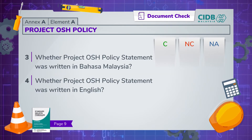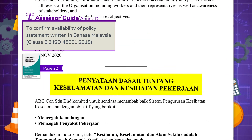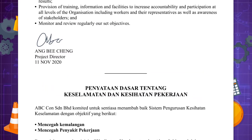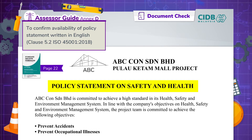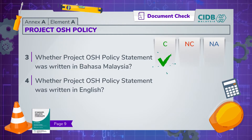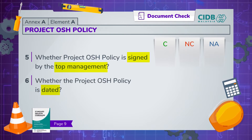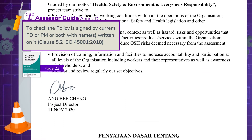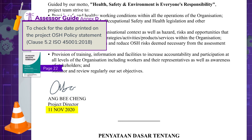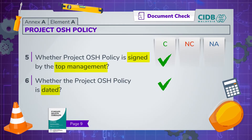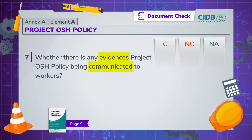Next, check if there's a written OSH policy in both Bahasa Malaysia and English, and if it's already signed by the top management and dated. Obtain documented evidence that the project OSH policy was communicated to all workers on-site.